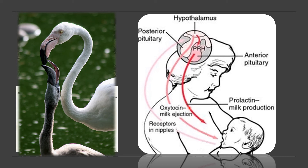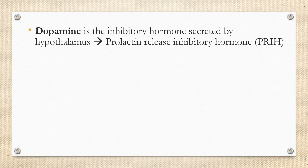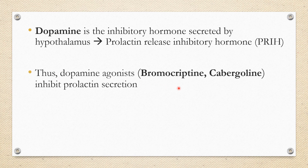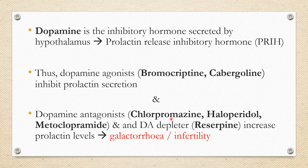Prolactin also suppresses the hypothalamus-pituitary-gonadal axis by inhibiting GnRH release. Hence, continuous high levels of prolactin during breastfeeding are responsible for lactational amenorrhea, inhibition of ovulation, and infertility for several months postpartum. Prolactin is under predominant inhibitory control of the hypothalamus through prolactin release inhibitory hormone, commonly known as dopamine, which acts on pituitary lactotrope D2 receptors. Thus, dopamine agonists like bromocriptine and cabergoline can inhibit prolactin secretion, while dopamine antagonists like chlorpromazine and haloperidol (typical antipsychotics), metoclopramide, and dopamine depleter reserpine can cause hyperprolactinemia, galactorrhea, and infertility.